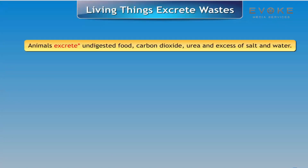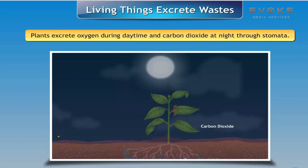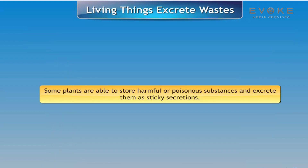Living things excrete wastes. Animals excrete undigested food, carbon dioxide, urea, and excess salt and water. Plants excrete oxygen during daytime and carbon dioxide at night through stomata. Some plants are able to store harmful or poisonous substances and excrete them as sticky secretions.